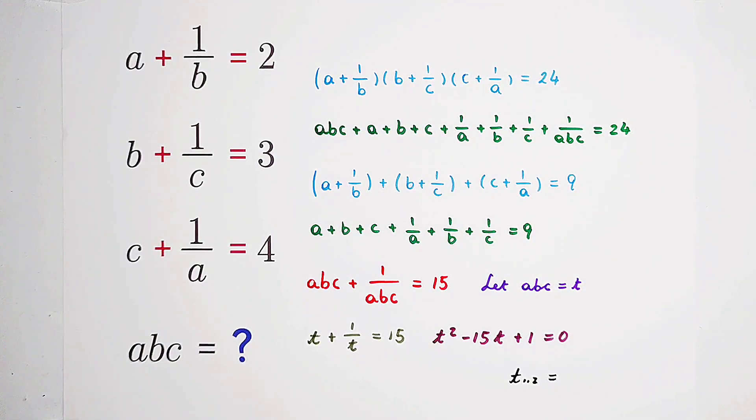t squared minus 15t plus one over c equals zero. t1 and 2 are